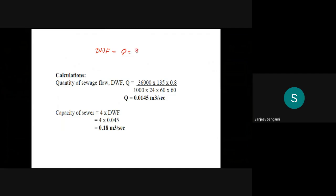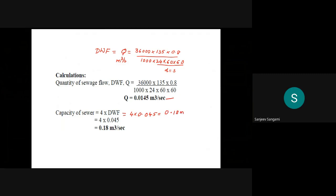Population is 36,000 multiplied by 135 lpcd, then 80 percent of it enters the sewer, divided by 1000 (to convert liters to cubic meters) and by 24×60×60 (to convert day to seconds). This gives Q equal to 0.0145 cubic meters per second. The capacity of the sewer is four times that, equal to 0.18 cubic meters per second.